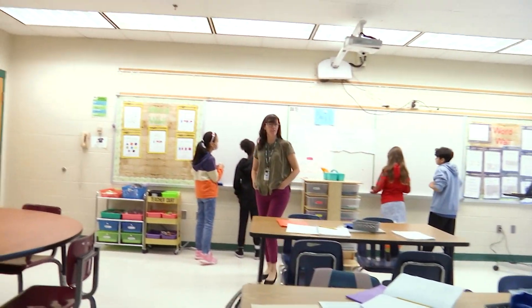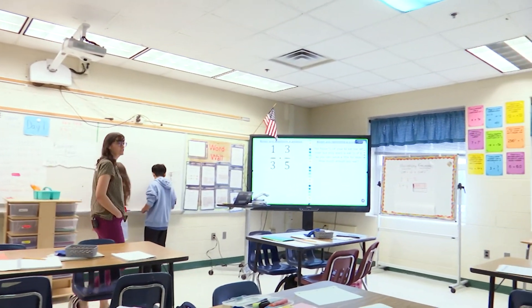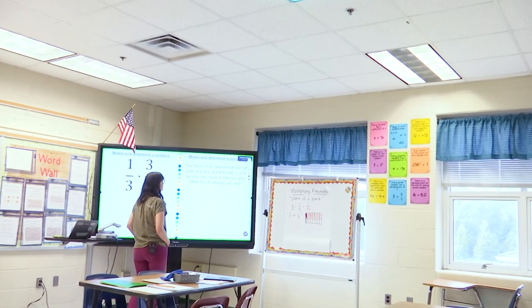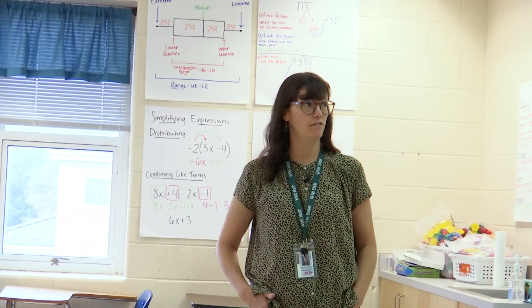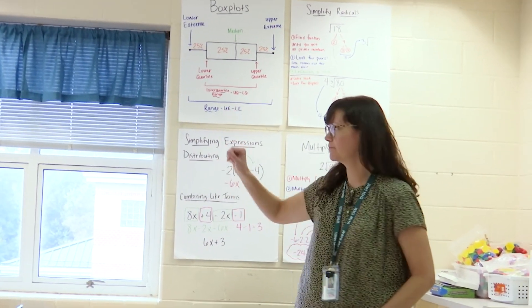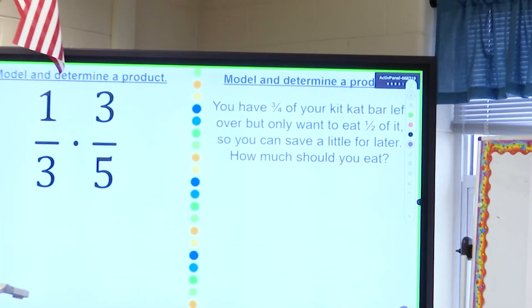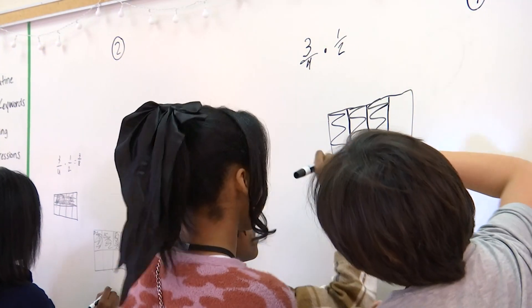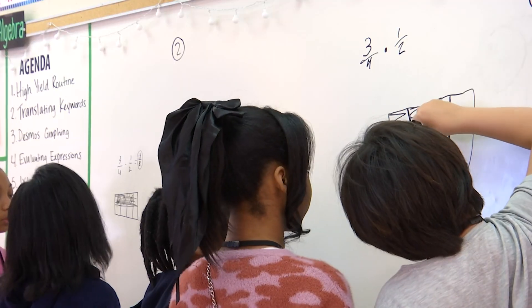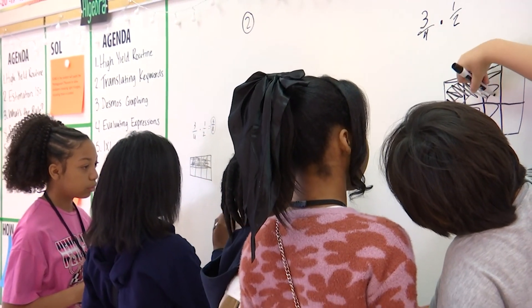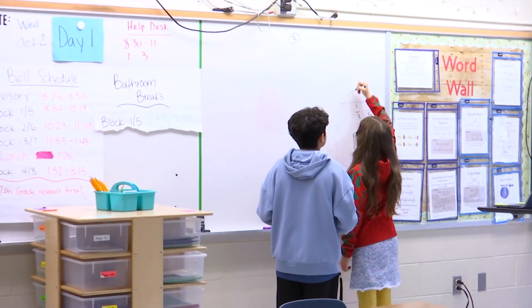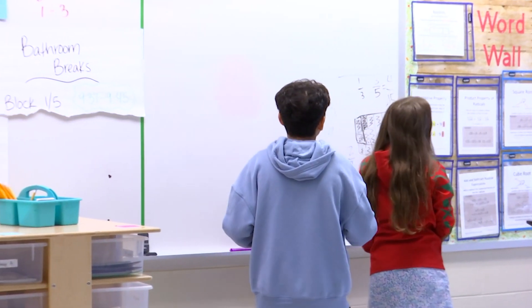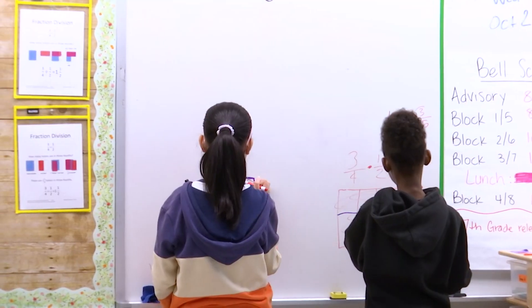If you didn't get it yet, keep working on the first problem — that's fine. But move on to the next one. So it is not just a normal problem, right? So let's read it and make sure we understand what we're doing. Remember, multiplying fractions is finding part of a part, right? So that should tell you that is multiplication. You're finding half of three-fourths of a Kit-Kat bar, right? Good job, group one. Looking good. And you all are sharing the marker — great job.